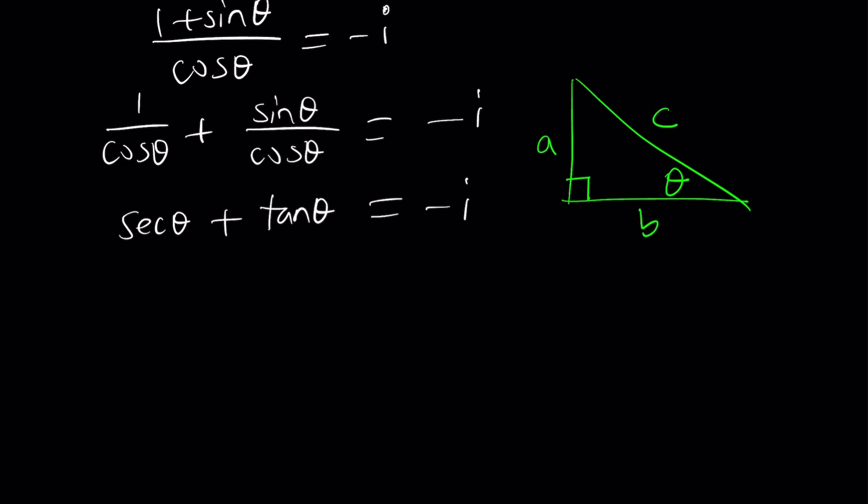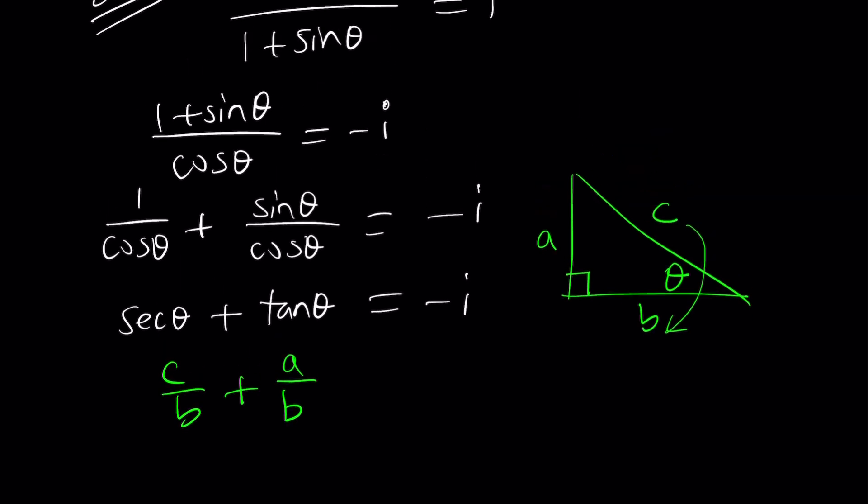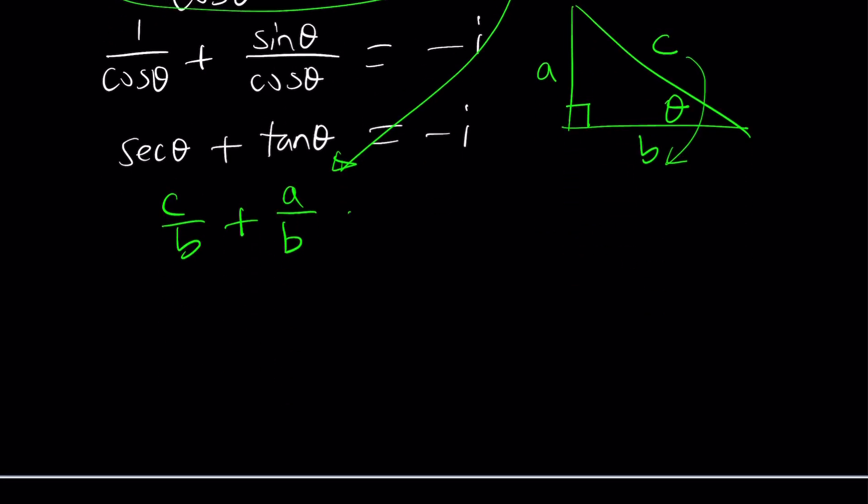Remember I told you I was going to use geometry. So here's a right triangle where theta is one of the angles and we can name these a, b, c. We have secant theta. Secant is the reciprocal of cosine which is b over c, so it's c over b. And tangent is a over b. Now we already knew that and I could probably take it from here.